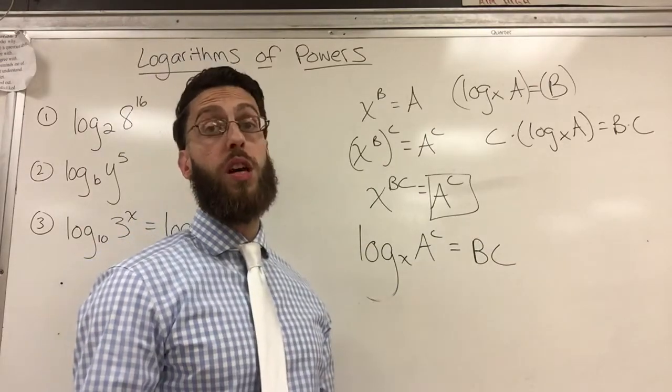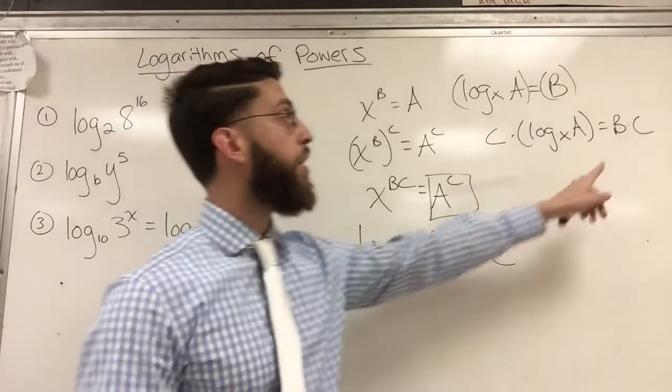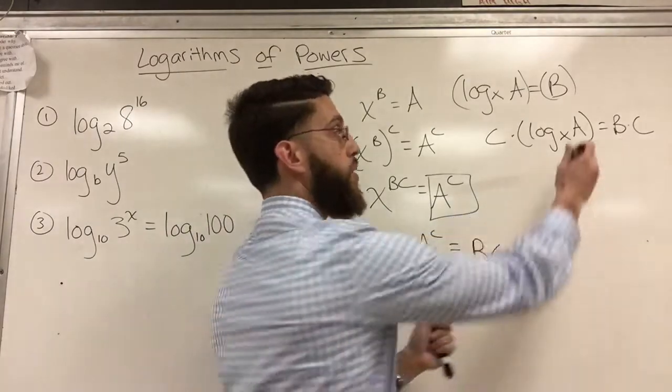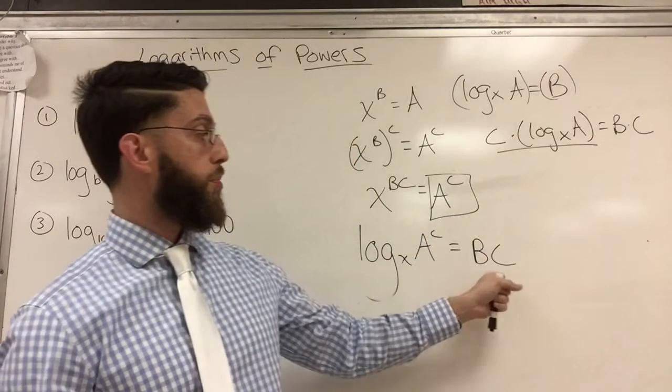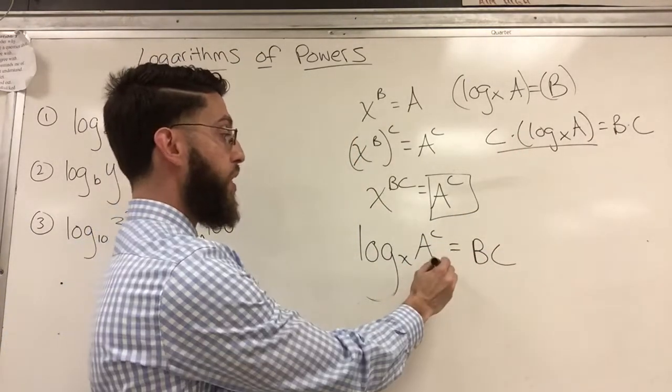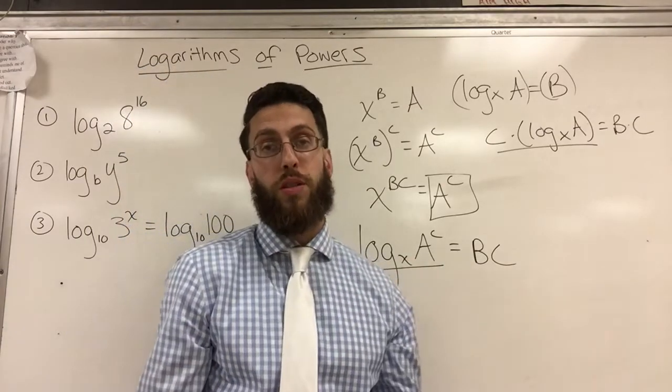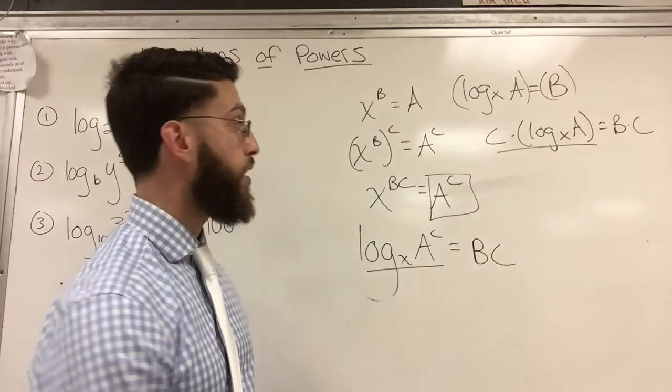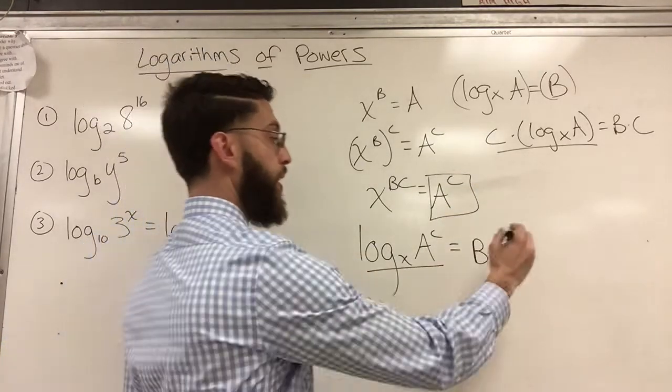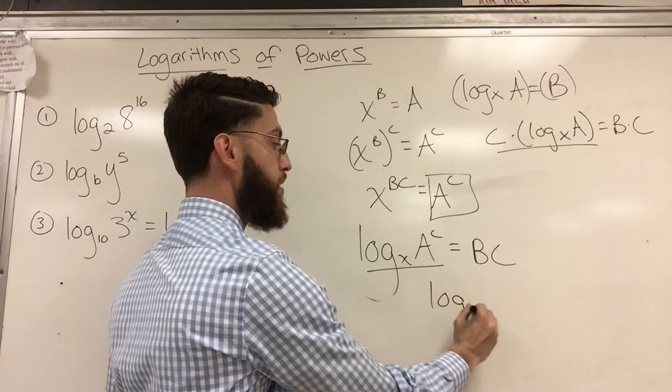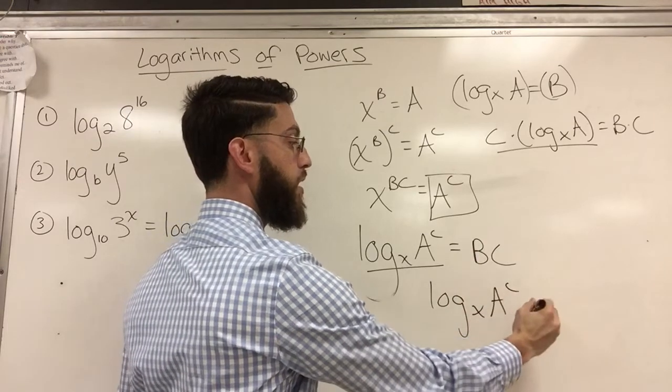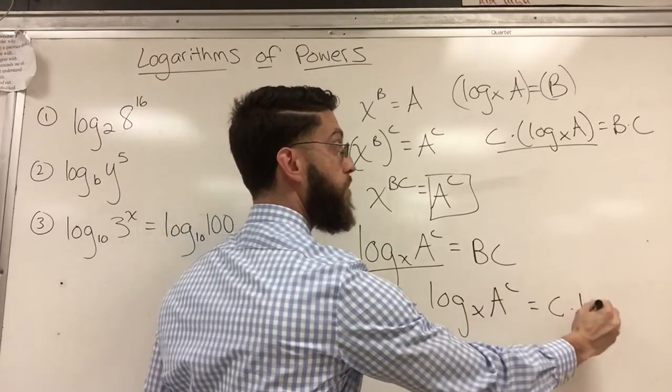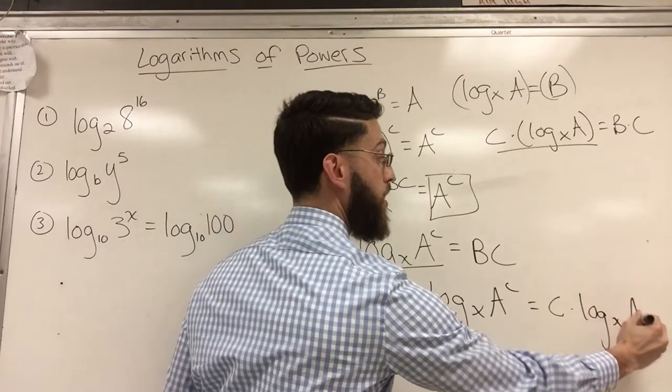I'm pretty much done because if you look carefully, bc is equal to this thing, but bc is also equal to this thing. So by substitution or the transitive property, this thing is equal to this thing.